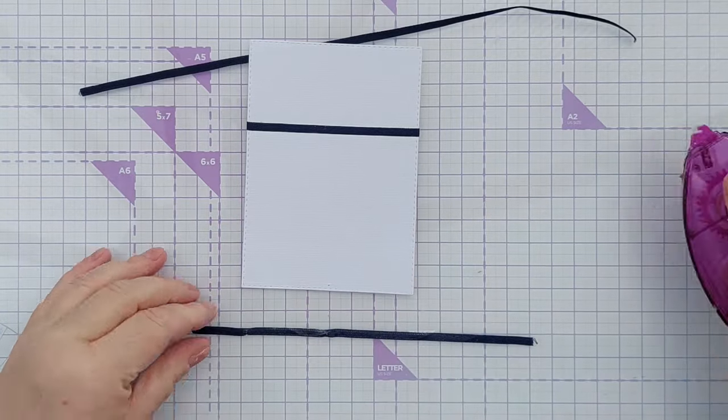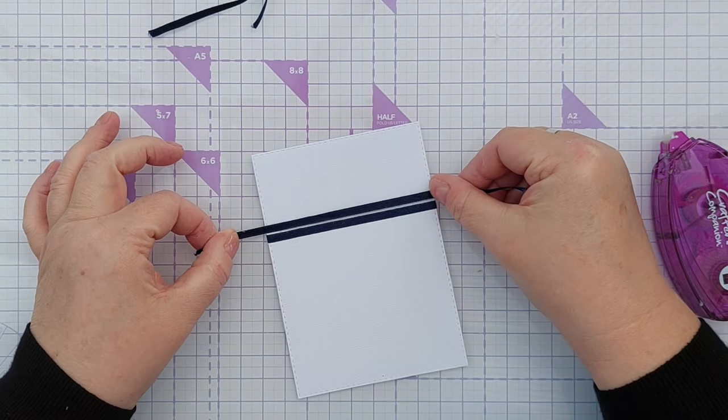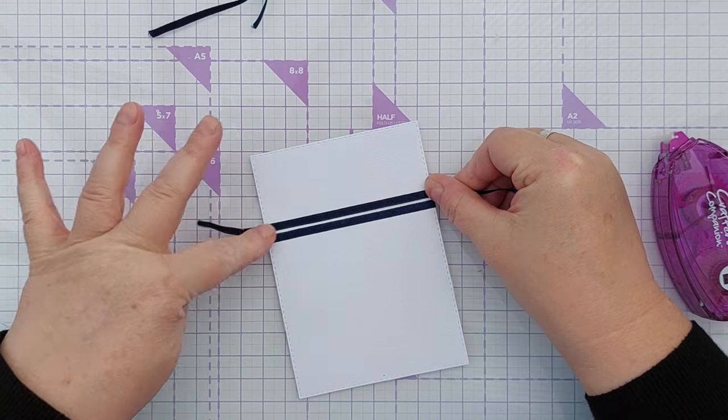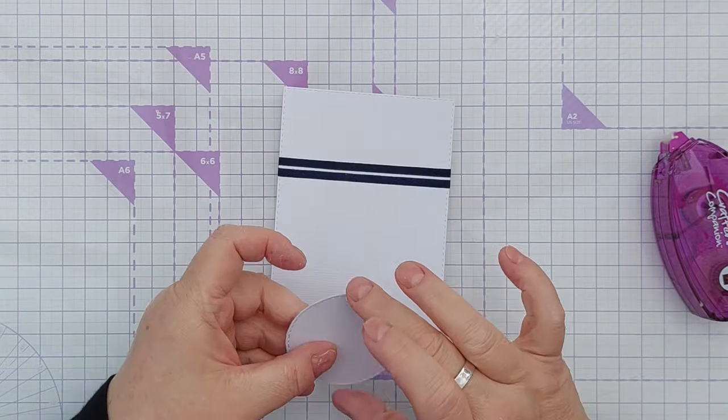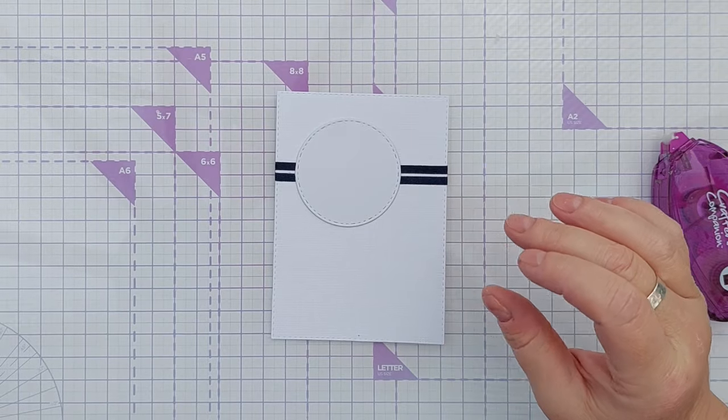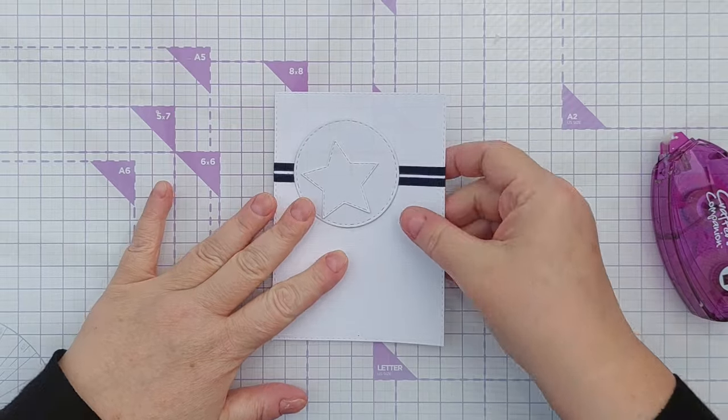And I'm going to do the same with this one, not going to bother with a pencil line this time because I think I can line it up like that and that can flip around the back. And now I can put my star and my circle in some kind of arrangement like that and I'll finish that off in a tick.